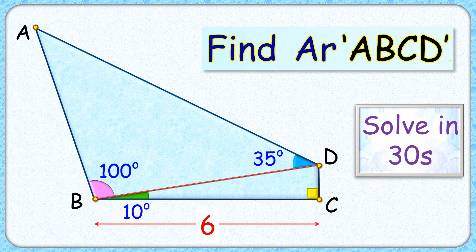Welcome everyone to this interesting question. We are given a quadrilateral ABCD with angle C as 90 degrees, angle B as 100 plus 10 degrees, and angle ADB is 35 degrees. One of the side lengths BC is given as 6 centimeters.